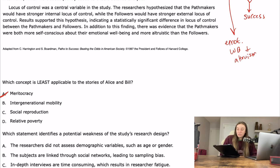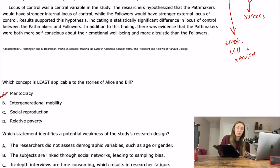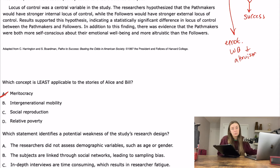Answer A says meritocracy — I think Alice and Bill are a great example of meritocracy, like they worked really hard and got what they worked for. So I'll mark that out. Answer B is intergenerational mobility — again, they're a great example of that. Intergenerational means between two generations there was a change in class. If Alice was born poor and grew up to be rich, she had some sort of SES mobility, so that's not the right answer.